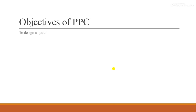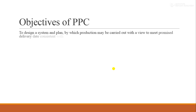Now let us see the objectives of the PPC. We know that the objective is to design a system and plan by which the production may be carried out with a view to meet the promised delivery date, consistent with minimum cost and quality standards. We are making such a system and plan so that our requirements can be easily achieved with minimum cost and quality standards.